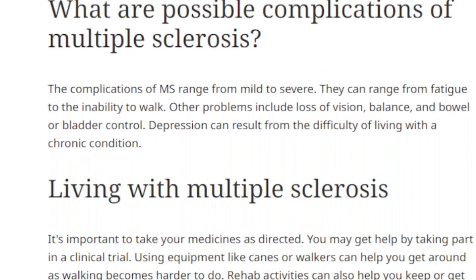The complications of MS range from mild to severe — from fatigue to the inability to walk. Other problems include loss of vision, balance, bowel and bladder control. Depression can result from the difficulty of living with a chronic condition, and that doesn't just go for multiple sclerosis — that goes for things like fibromyalgia and basically anything that causes you to be sick or not be where you used to be.